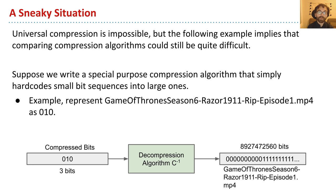So what I mean by this is, let's suppose we write a special purpose compression algorithm that simply hardcodes a small bit sequence and returns a large one. So this file, Game of Thrones, Season 6, Razor, blah, blah, blah. This MP4 file, it's really big. It's almost nine gigabytes, or gigabits. And this decompression algorithm, you could, in principle, write a program. You give it 0, 1, 0. And it gives you back these 9 billion bits.